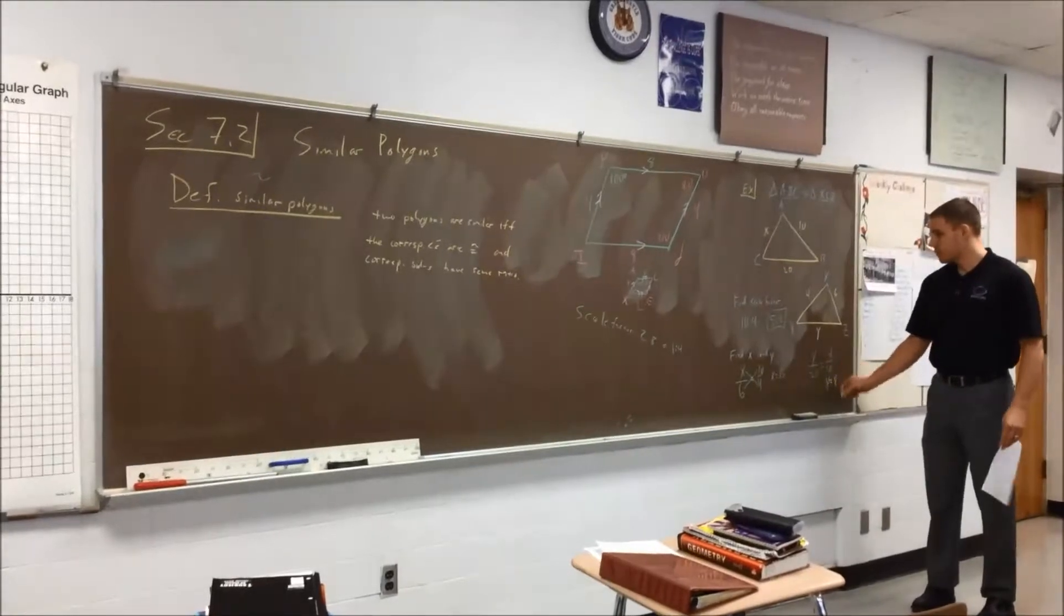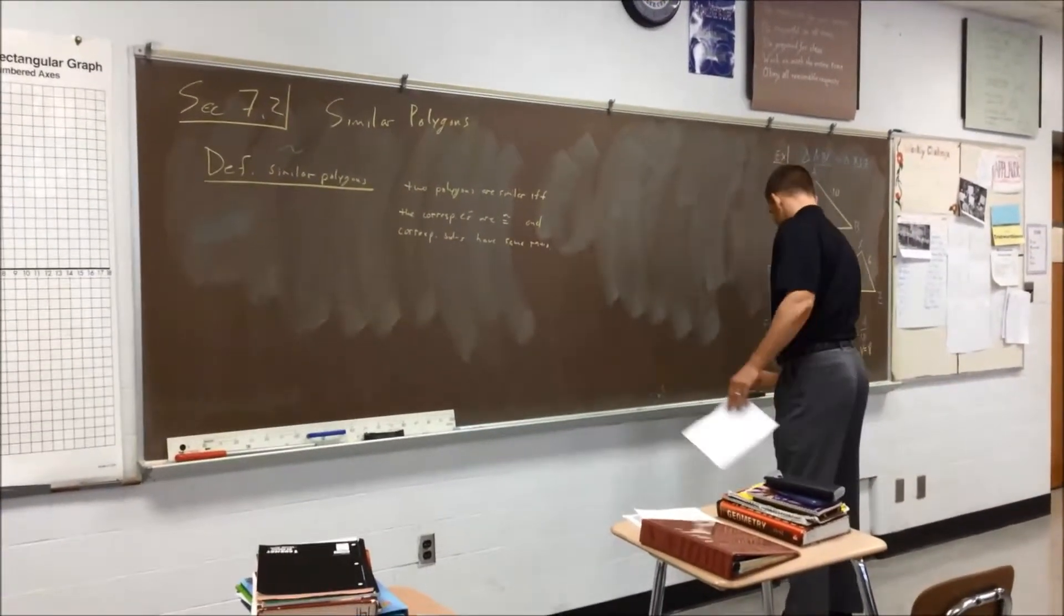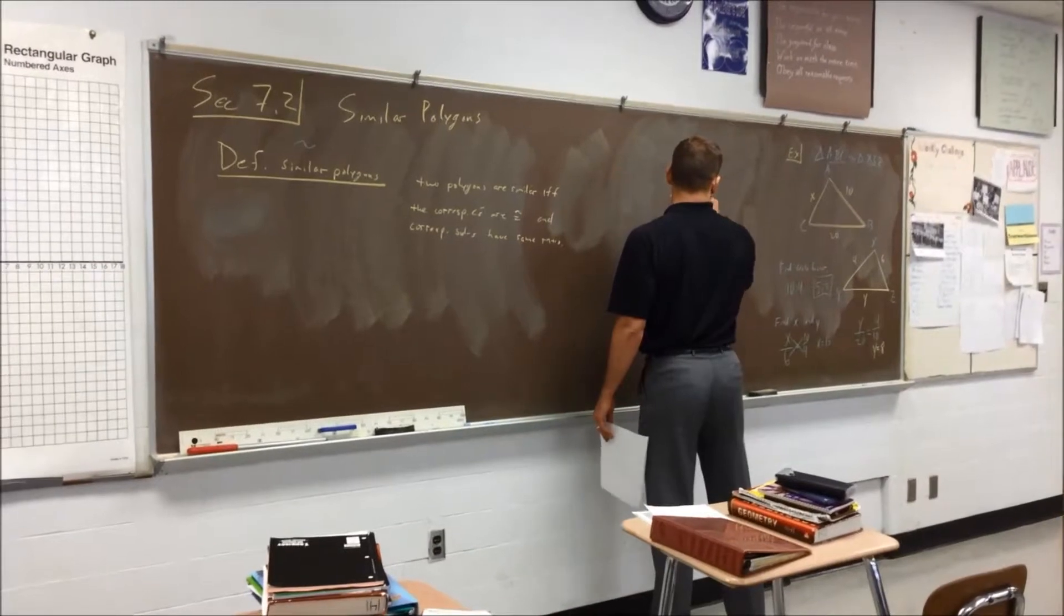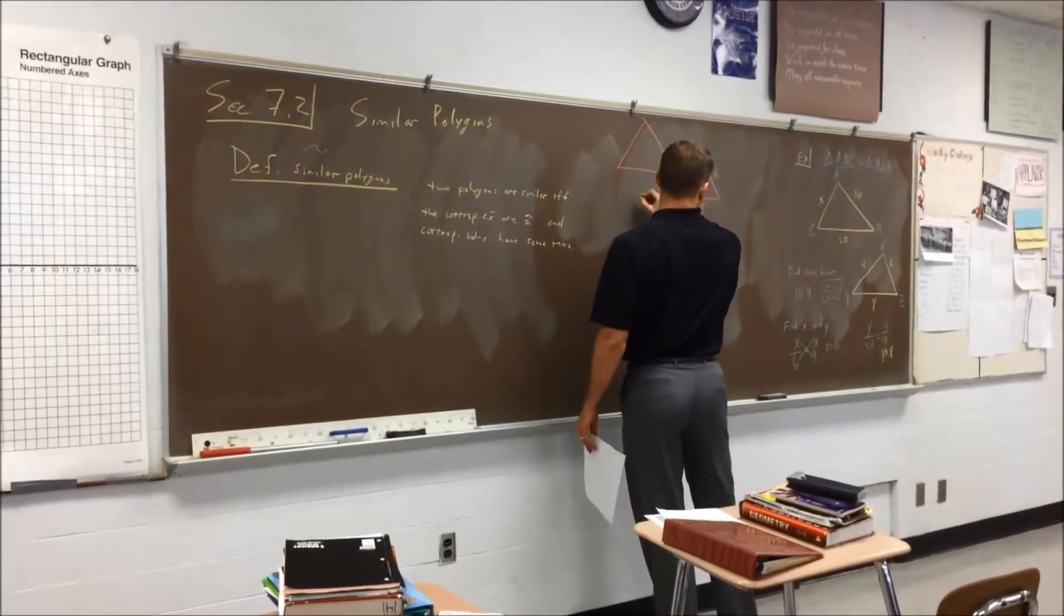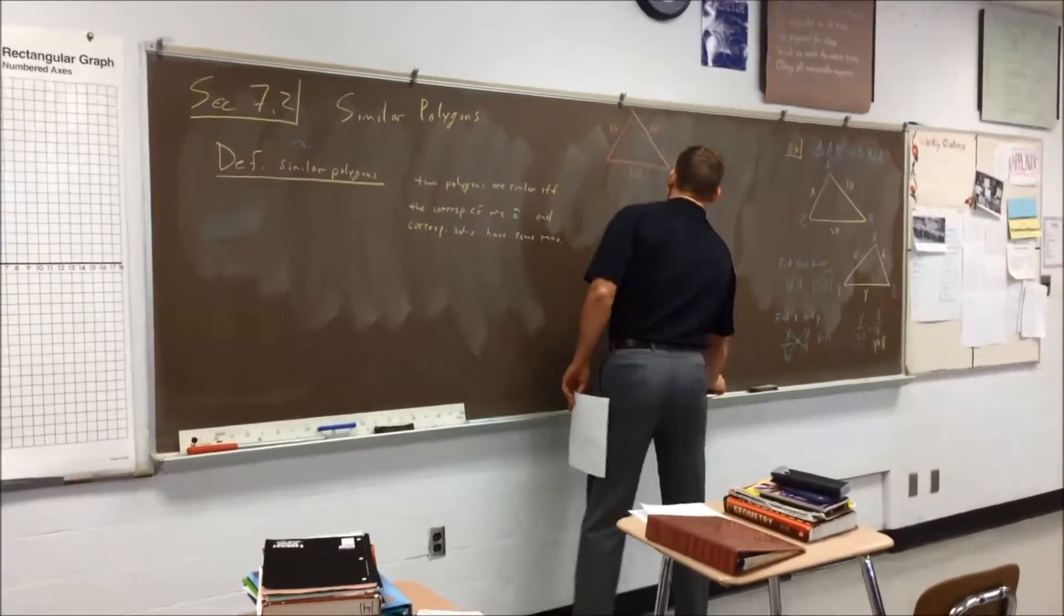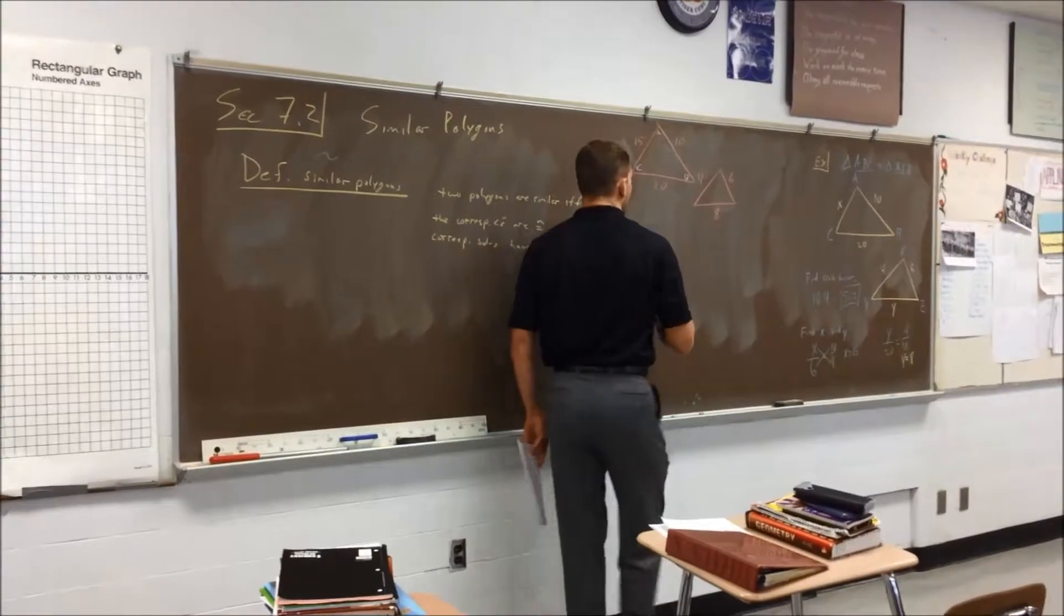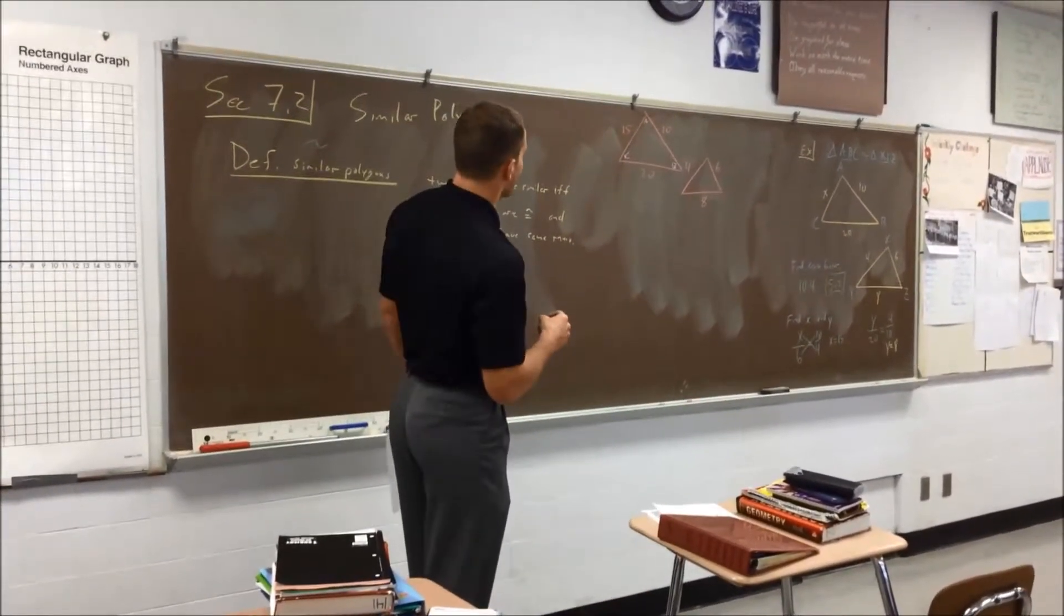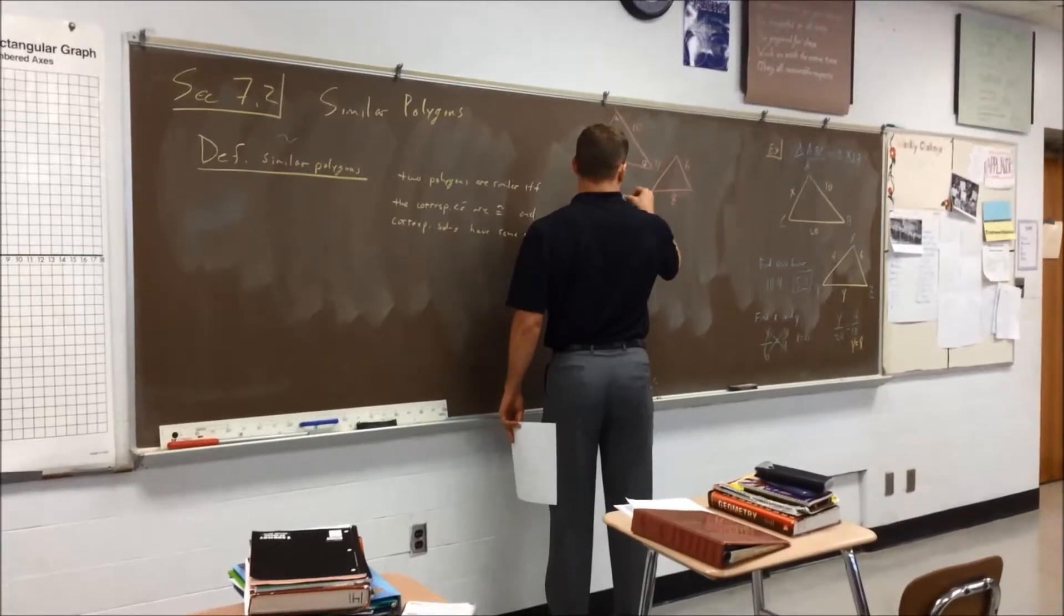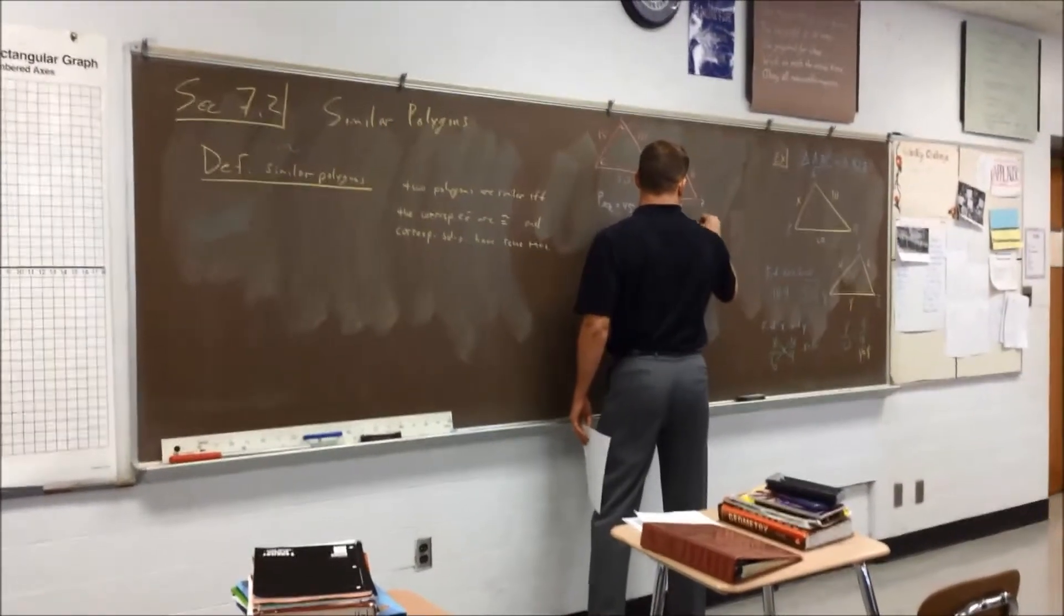One last thing here. Now that we know that y is equal to 8, let's say a figure here: 4, 6, 8. The other one was 15, 10, 20. Find the perimeter of ABC. What's the perimeter of XYZ? 18.